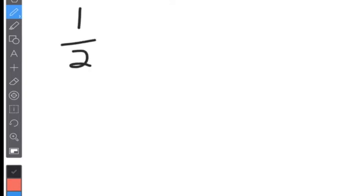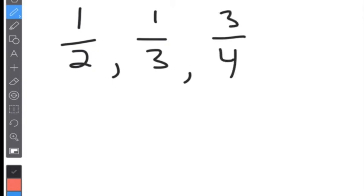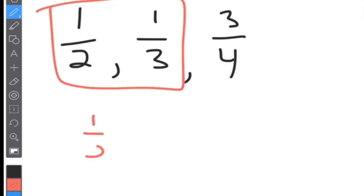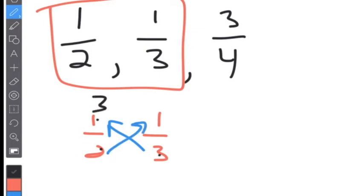The next thing you definitely need to know is how to order fractions. There are several ways to do it. Let's get three fractions: one half, one third, and three fourths. One way is to go ahead and start cross multiplying, and then you can narrow it down and order them from there. If I take the first two fractions — one half and one third — and cross multiply, we go up and up: three times one is three, two times one is two. So one half is going to be bigger than one third.